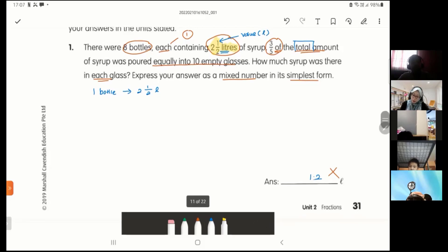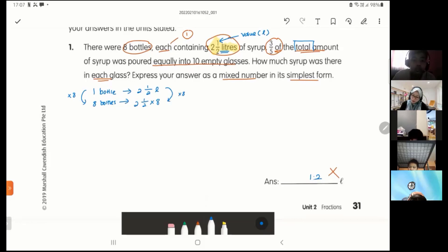So you want to find eight bottles. From one to eight, one times eight gives me eight. Over here, you have to do the same, times eight. So two and a half times eight. Can I just times like that? Two times eight, 16, then put half at the back. Cannot. You have to change the mixed number to become improper fraction first. So two times two plus one, you go anti-clockwise. Two times two is four, four plus one is five.